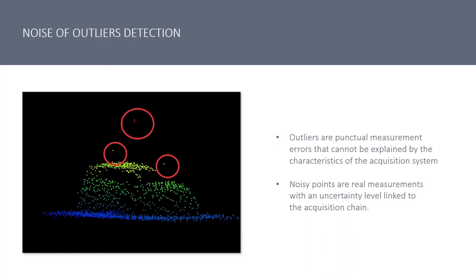When we talk about outliers, when we cut the data and make a slice of the data and view it vertically, we can easily identify where the outliers are. If we don't have this module in our software, we would have to select these outliers manually and then delete them from our data. You can imagine if we have millions of points in our point cloud and have to select and delete outliers one by one.